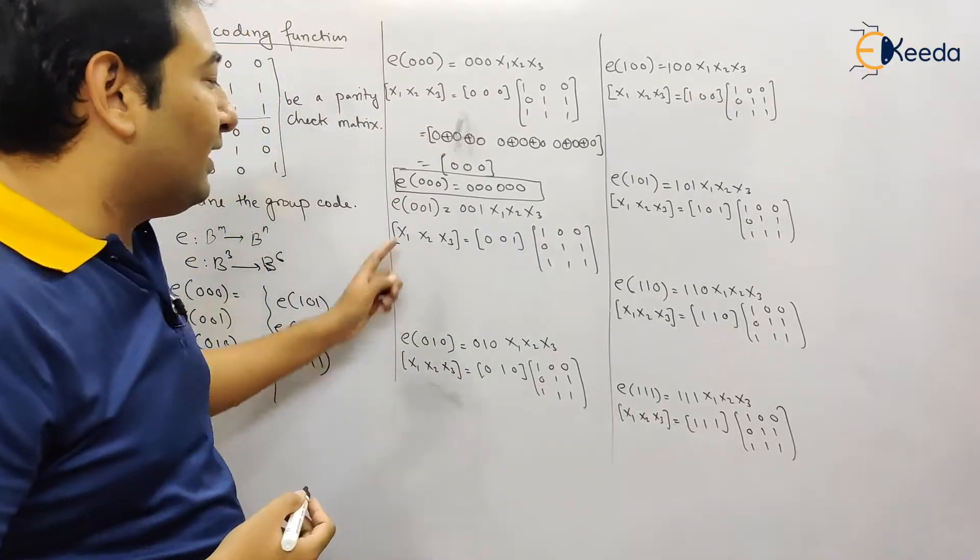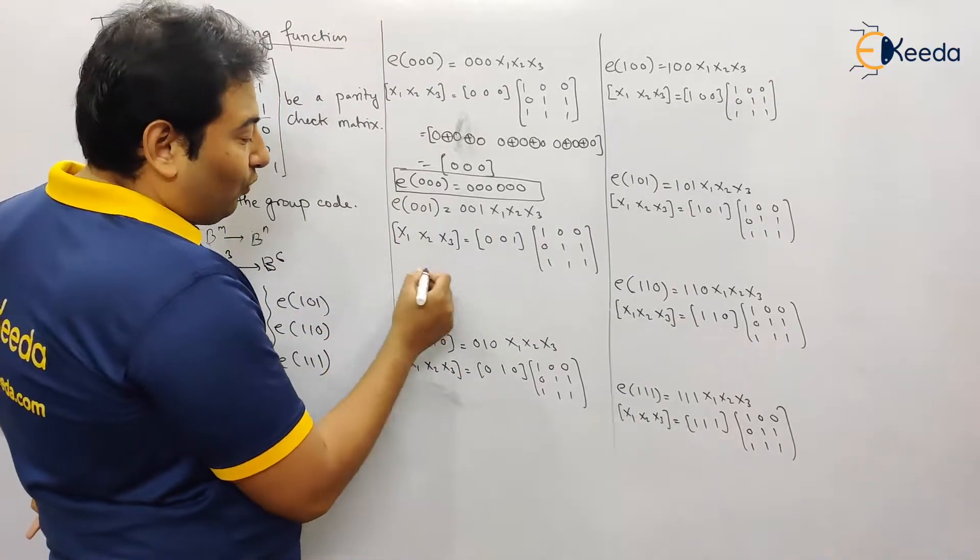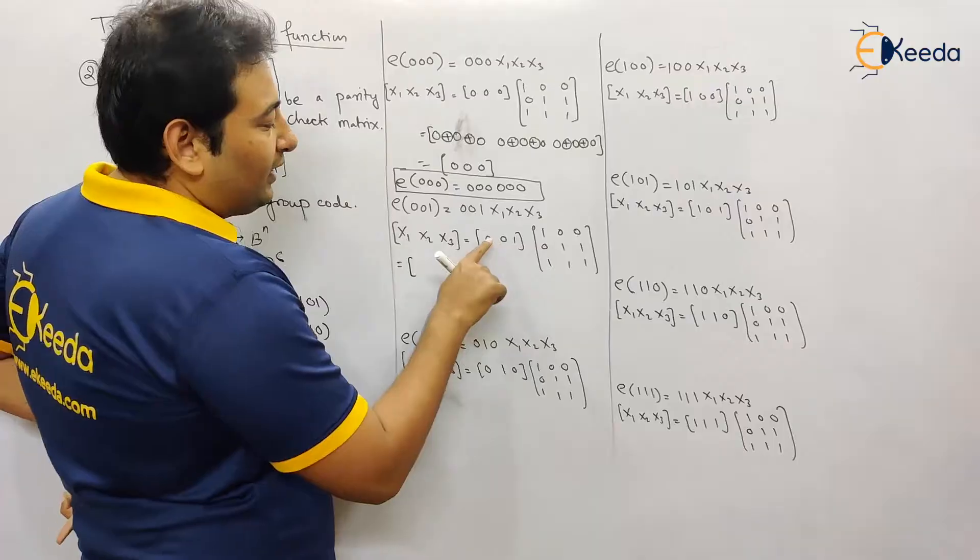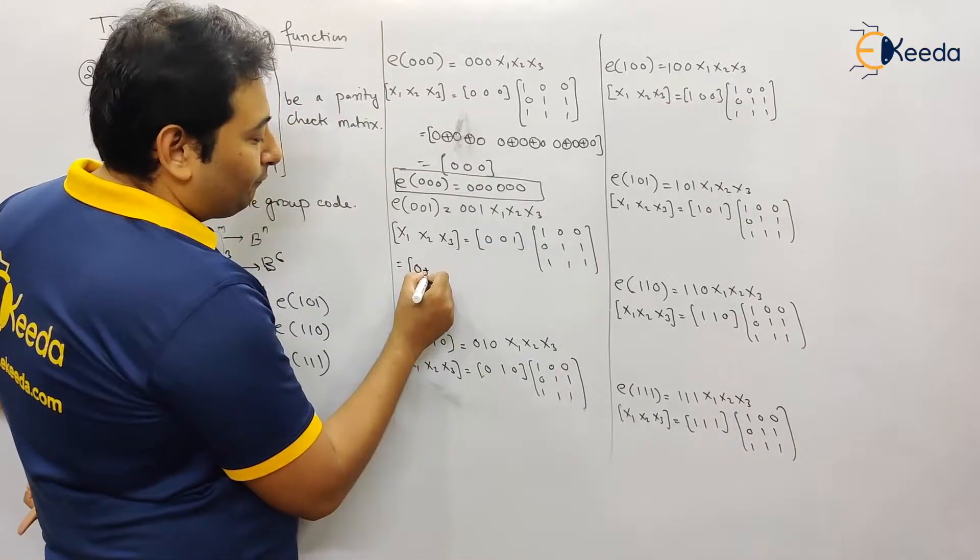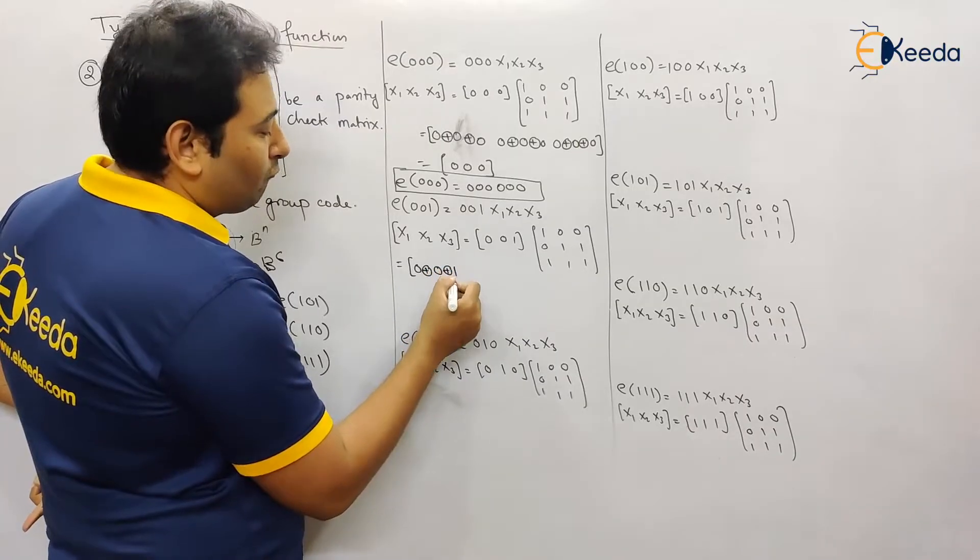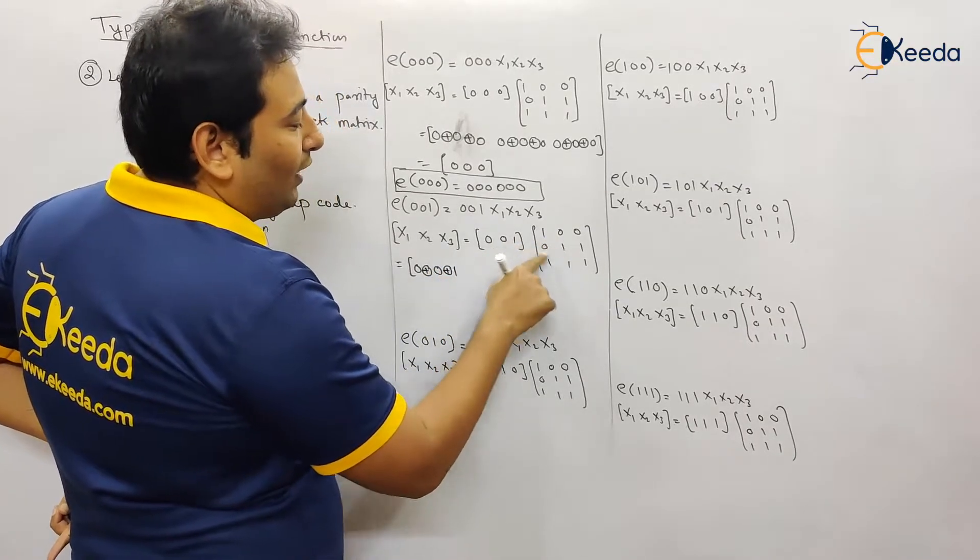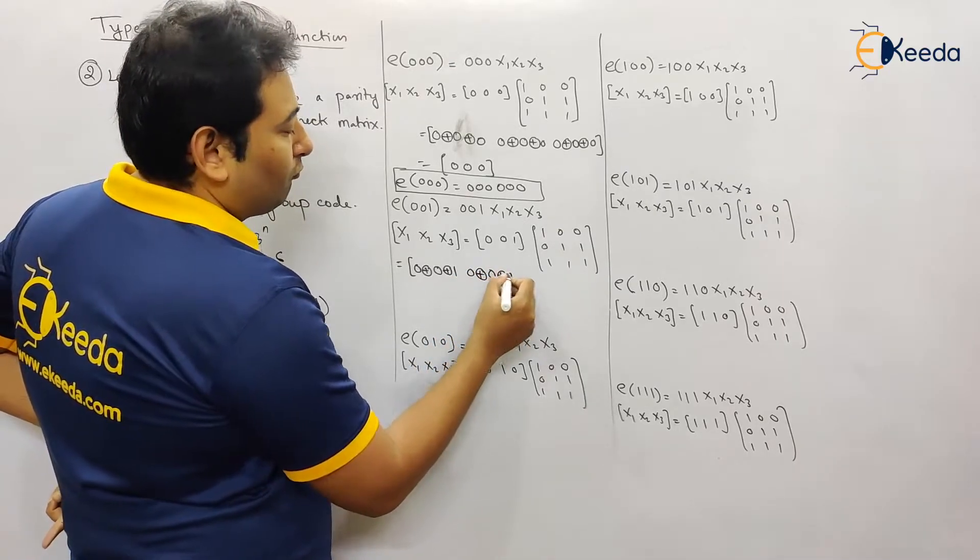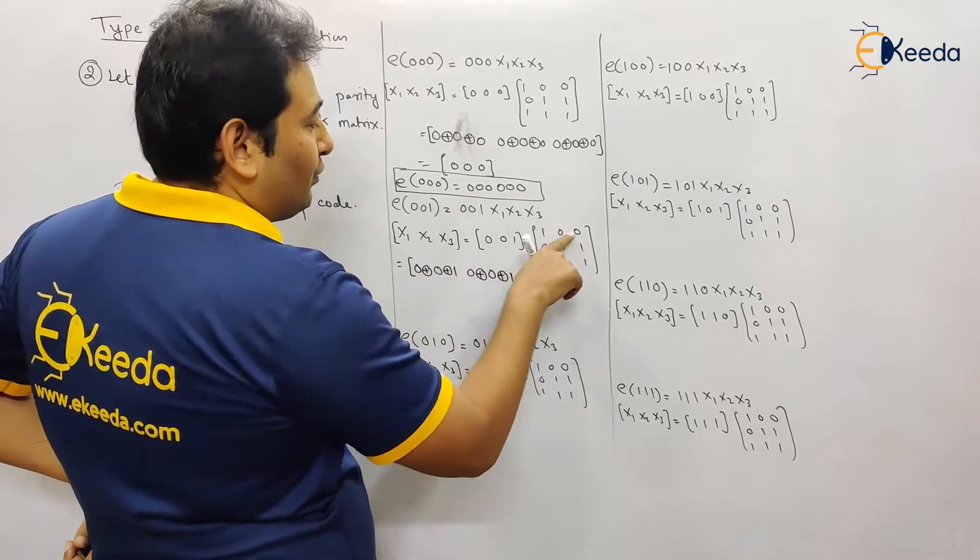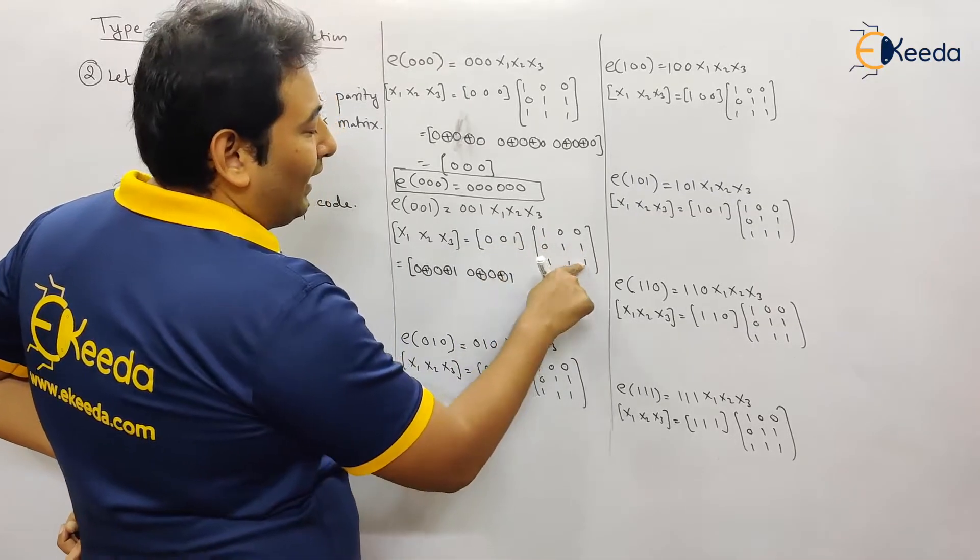What next? Let us find out the code for e 0 0 1. So which is equal to, let us multiply: 0 into 1 0 0 and 1, next 0 0 and 1, next 0 0 and 1.